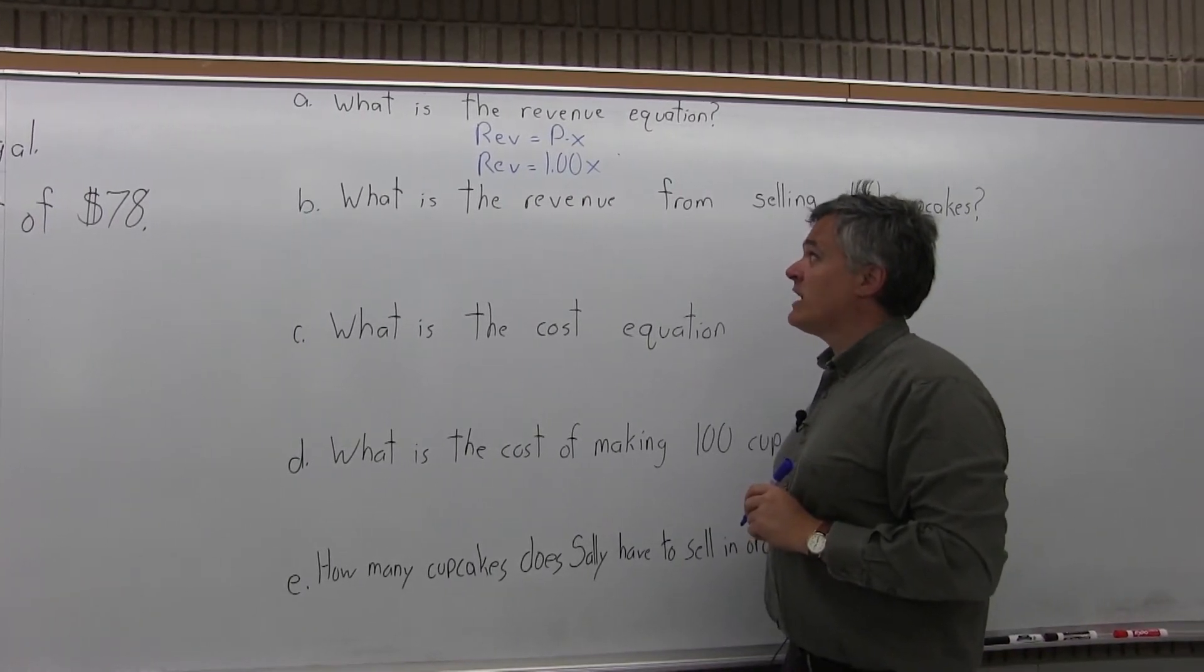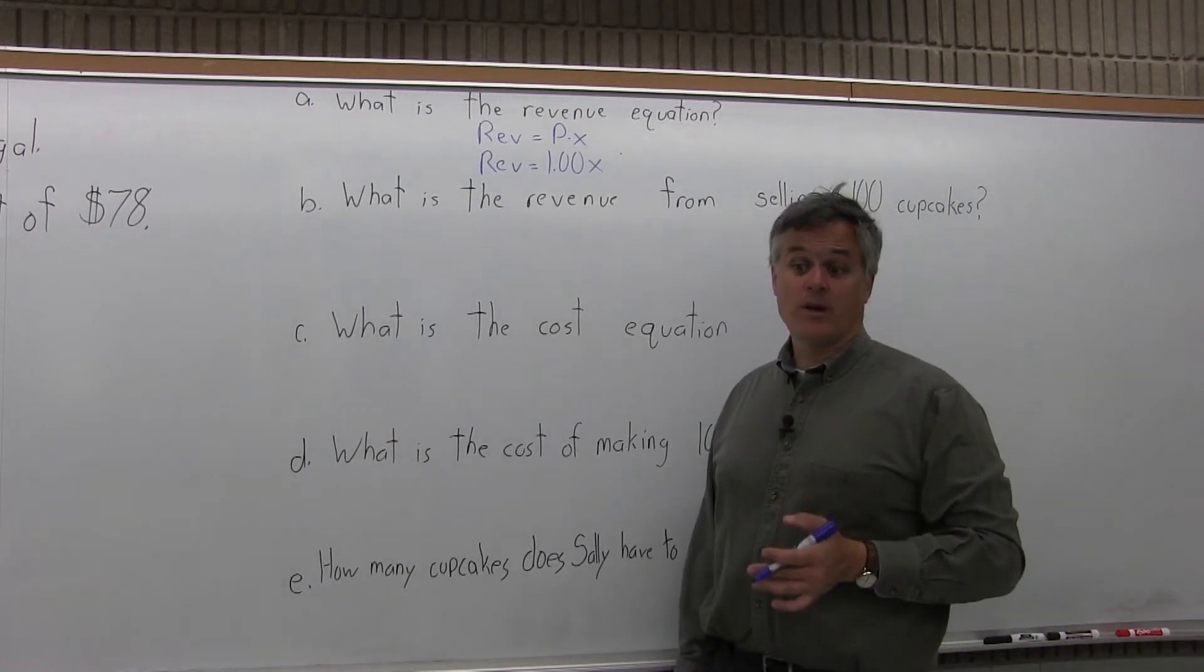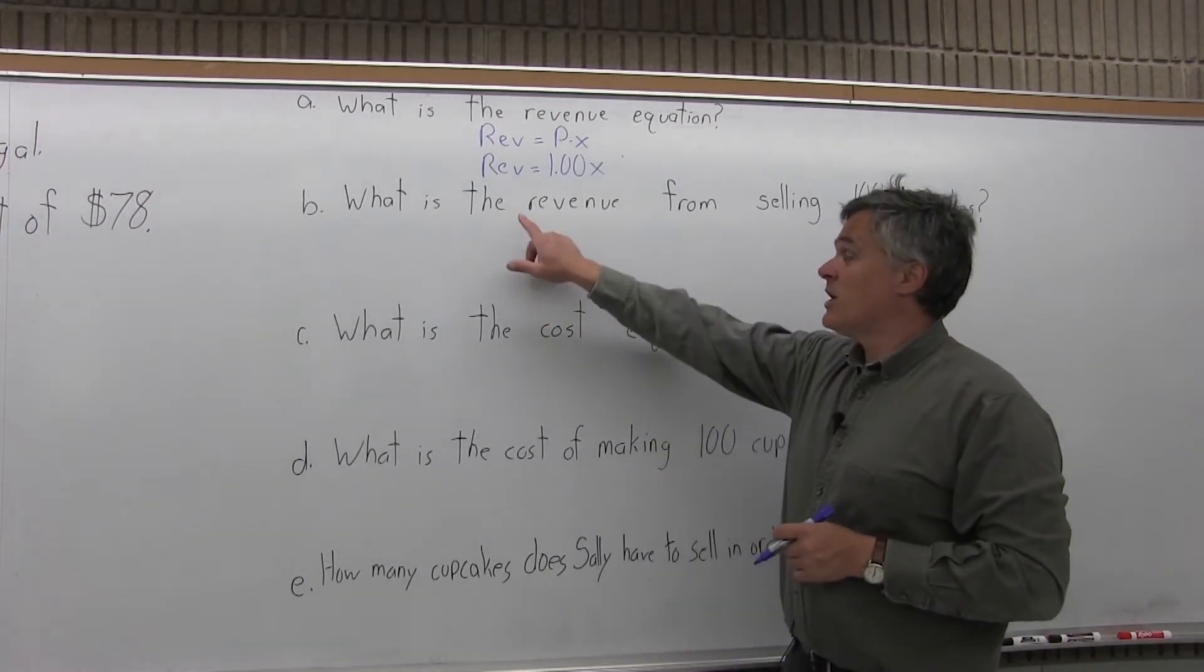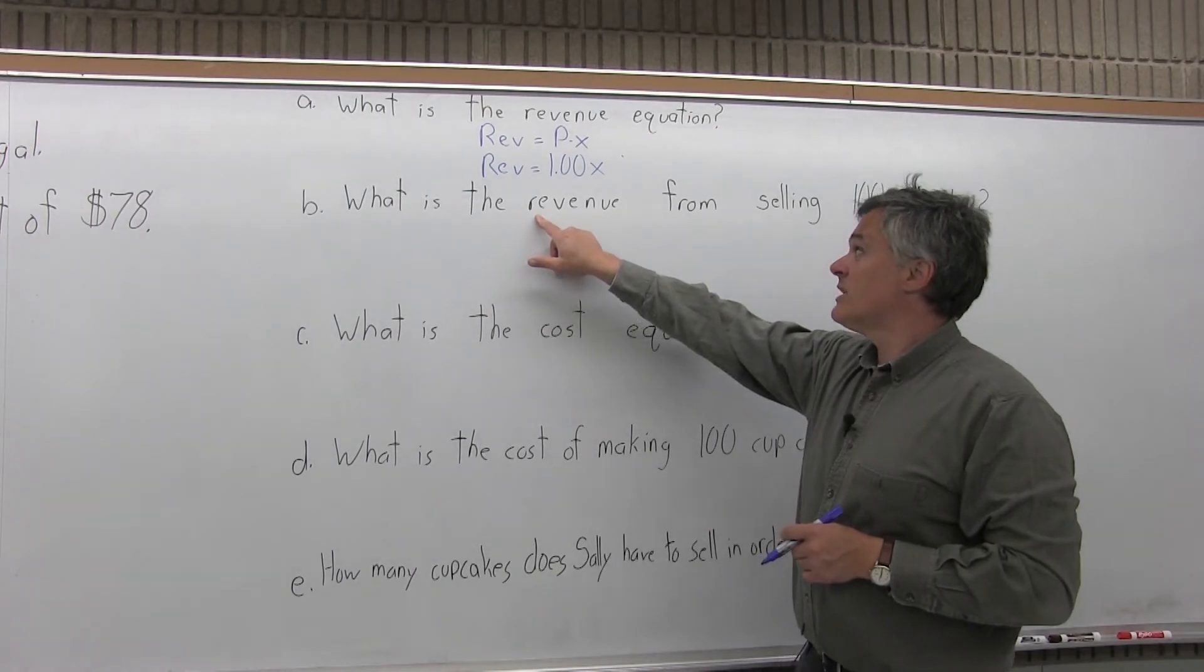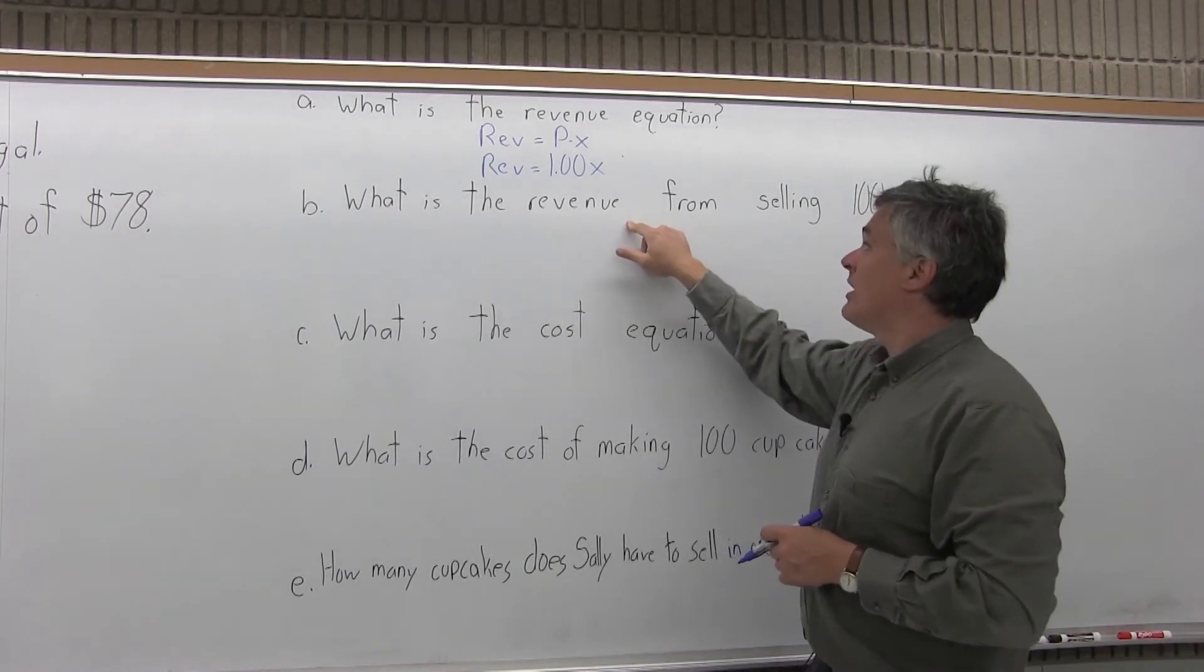Now when you have that, you can figure out the revenue earned from any number of cupcakes sold. And that's what part B asks us to do. It says what is the revenue from selling 100 cupcakes?